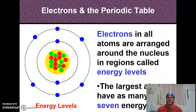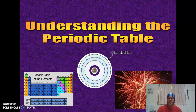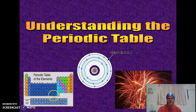Just a quick review: electrons in all atoms are arranged around the nucleus in regions called energy levels — I would also call that the orbit or the electron cloud. The largest atoms have as many as seven energy levels, and if we take a look at the periodic table, we can see it has one, two, three, four, five, six, seven rows.